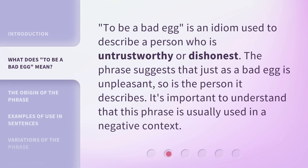To be a bad egg is an idiom used to describe a person who is untrustworthy or dishonest. The phrase suggests that just as a bad egg is unpleasant, so is the person it describes. It's important to understand that this phrase is usually used in a negative context.